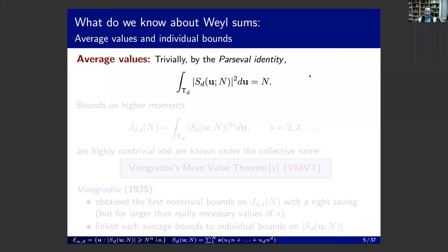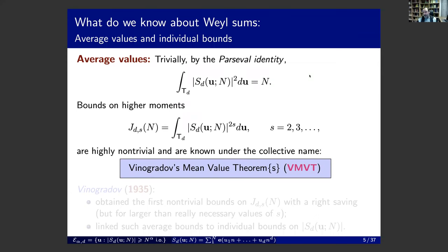If you make one step forward and look at higher moments — for example the fourth moment — the equation becomes highly non-trivial. Finding estimates of this type, the integral over all possible coefficient vectors u over the unit cube T^d, for s = 2, 3, and so on, are known under the collective name Vinogradov's mean value theorem — though it's better to use plural since there are several modifications. It will be abbreviated as VMvT.